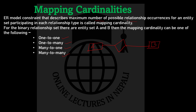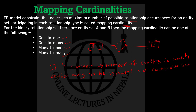Mapping cardinality refers to the maximum number of possible relationship occurrences for an entity set participating in a relationship type — that is, the number of possible instances of one entity set that can be associated with instances of another entity set through a relationship.